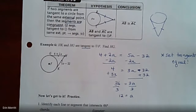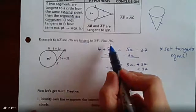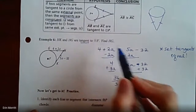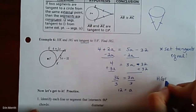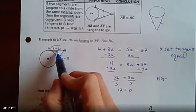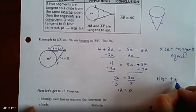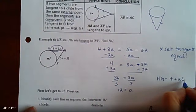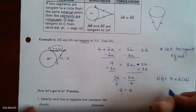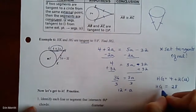Always reread the question before finishing. It asks to find HG, so we plug back into the expression for HG: 4 + 2 times a, which gives us a final answer of 28.